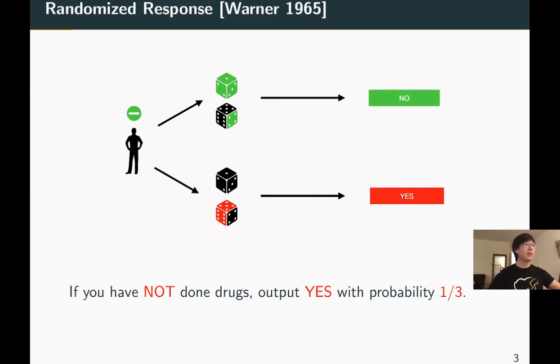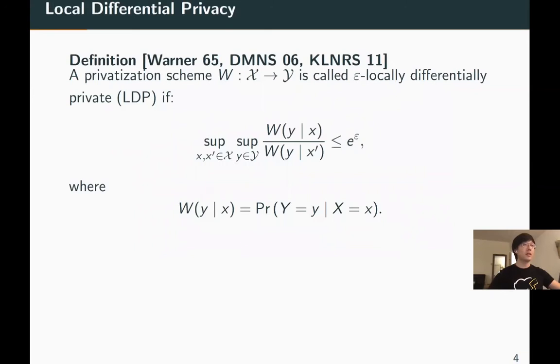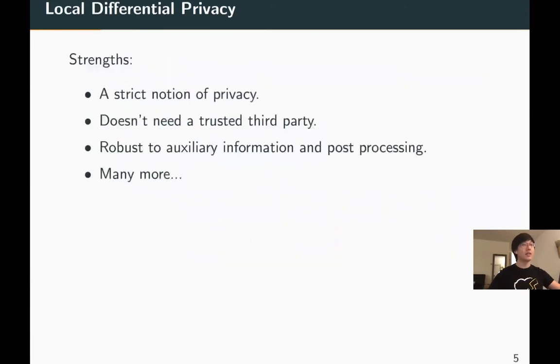This scheme satisfies local differential privacy. It requires that for any distinct pair of inputs x and x prime, and any output y, the ratio between Pr(Y = y | X = x) and Pr(Y = y | X = x') is bounded by e to the epsilon. The smaller epsilon is, the more privacy you have. Randomized response satisfies epsilon equals ln(2) LDP. The notion provides strict privacy guarantee, even when the data collector is malicious. It is robust to auxiliary information and post-processing.